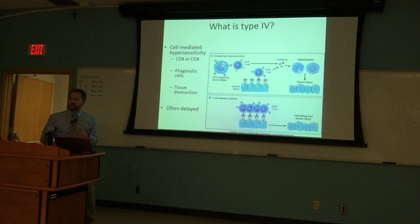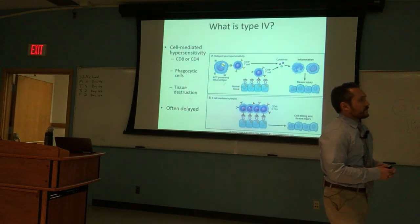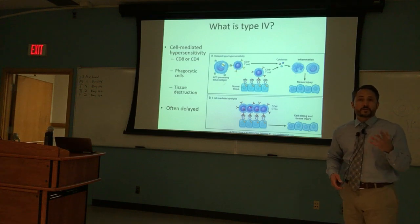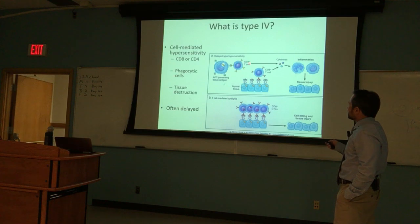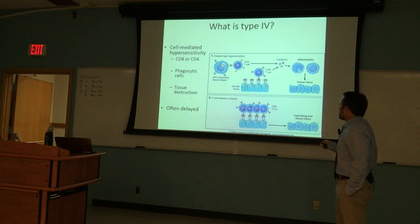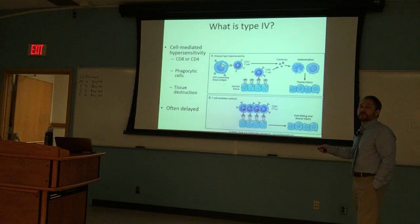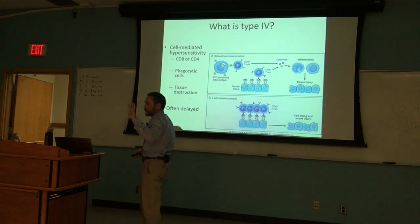Last but not least, type 4 — a cell-mediated hypersensitivity. It could be CD4 or CD8; we have phagocytic cells involved; tissue destruction takes place; and it's often delayed — it doesn't happen nearly as quickly as types 1, 2, and 3. CD4 helper T cells trigger inflammation via cytokines; CD8 cytotoxic T lymphocytes can target and destroy the cell itself.